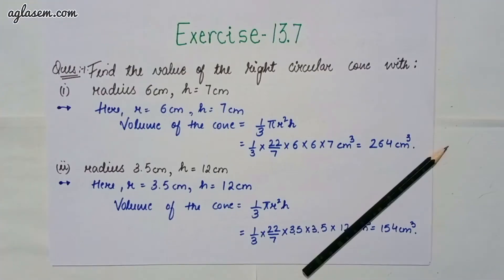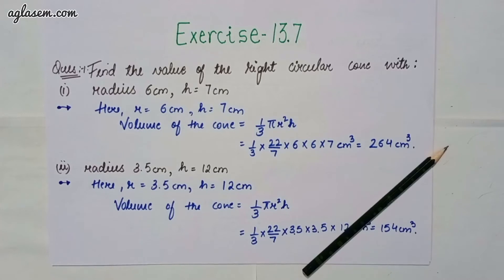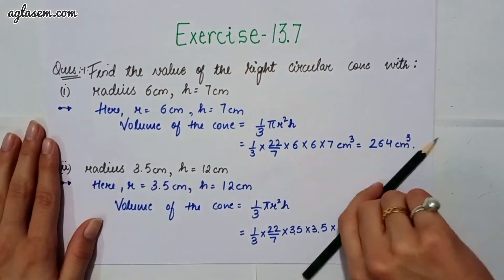Hello everyone, I hope you all are doing great. Welcome back to our channel, Agla Same Schools. Today we will be covering chapter 13, that is Surface Area and Volume. Starting with the 7th exercise, that is 13.7. Our first question says: find the volume of the right circular cone with radius 6 cm and height 7 cm.